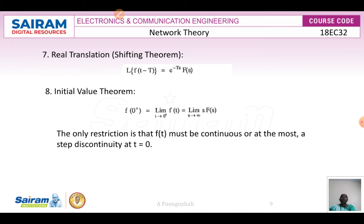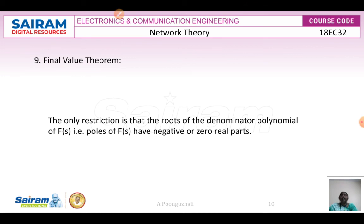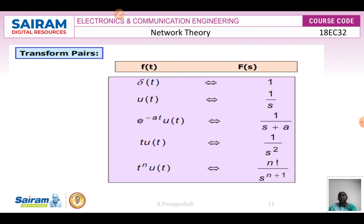The initial value theorem states that f(0+) = limit as t→0+ of f(t) = limit as s→infinity of s·F(s). The only restriction is that f(t) must be continuous or at most have a step discontinuity at t = 0. The final value theorem states that limit as t→infinity of f(t) = limit as s→0 of s·F(s). The restriction here is that the poles of F(s) must have negative real parts or be at the origin.